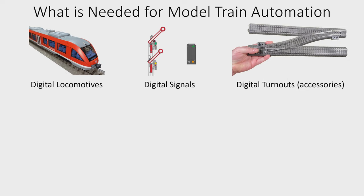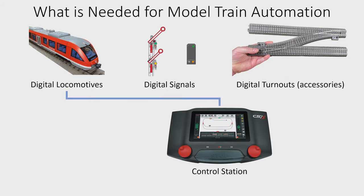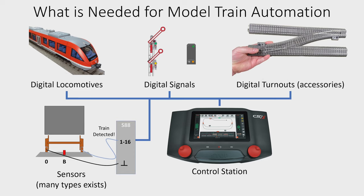In order to control our digital locomotives, signals and accessories, we need a control station. The control station will connect to all of these and control the layout. However, one of the biggest challenges with train automation is figuring out where the train actually is on the layout. In order to figure that out, we need some sensors to detect where the train is on the layout.